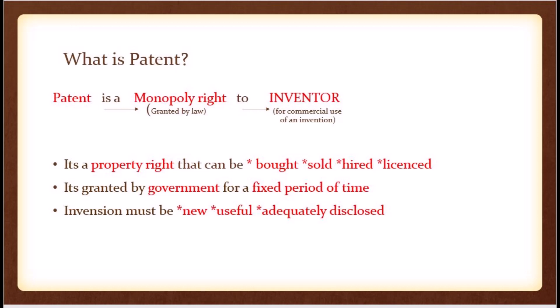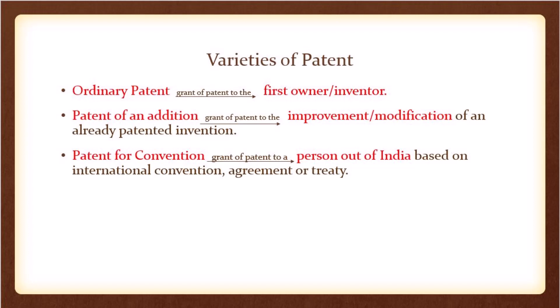Let's look into some of its features. First, it's a property right that can be bought, sold, hired, or licensed. Second, it is granted by government for a fixed period of time. Third, the invention must be useful, new, and adequately disclosed.